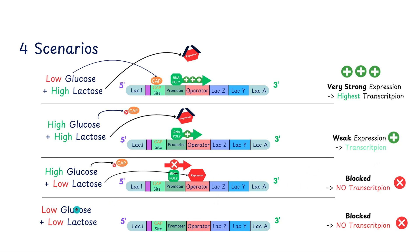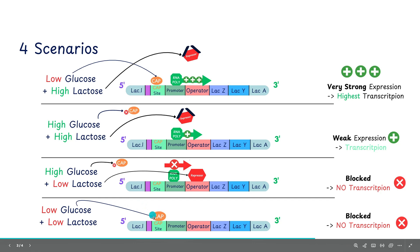For the fourth case scenario, we have both low glucose and low lactose. This is a pretty unideal situation for the E. coli bacteria, and thus because we have low glucose, we would actually make the catabolite-activated protein because ATP is converted to cAMP, and cAMP then activates CAP, so that binds on the CAP site. However, low lactose, we don't have as much allolactose, and thus the repressor is still strong and bound to that operator region, and the RNA polymerase is still, even though it has that elemental boost from the CAP, it's unable to transcribe because the repressor acts as a roadblock for the RNA polymerase to transcribe the structural genes. And thus, we see in the fourth case scenario that it's also blocked and no transcription.